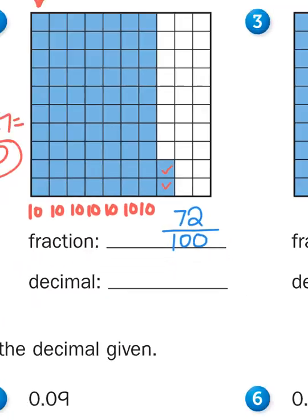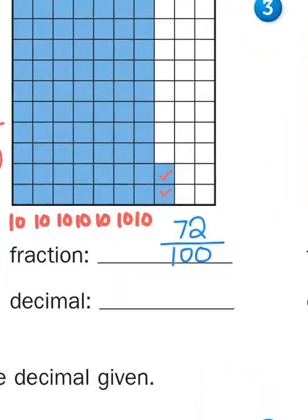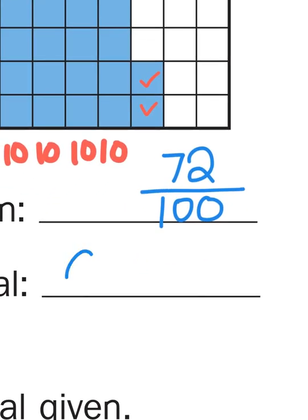Now, in terms of decimal value, I would do the same thing. Put a zero there, with a decimal point. And then I would just basically write the amount that's above, that's the numerator, down here to the right of the decimal point. Seventy-two hundredths.